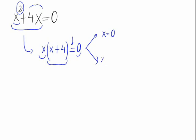So, when the first is 0, or when the second is 0. x equals 0. The first is done. The second, x plus 4 equals 0, from which we deduce x equals minus 4.